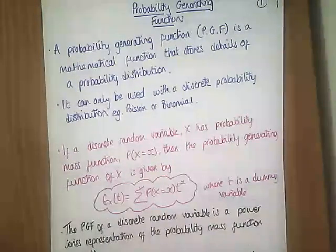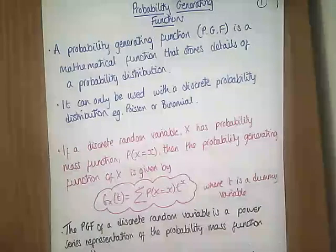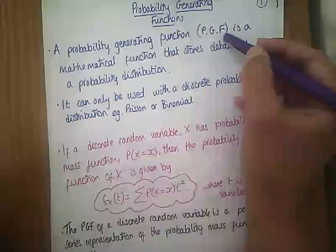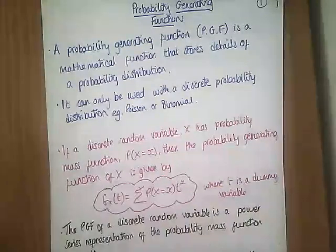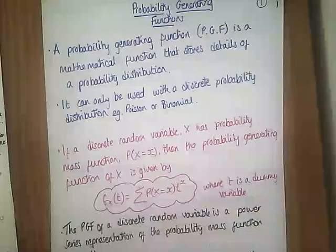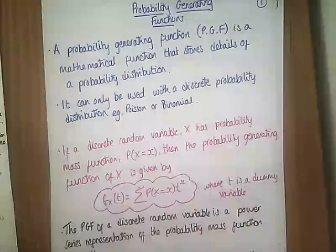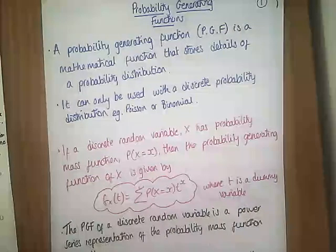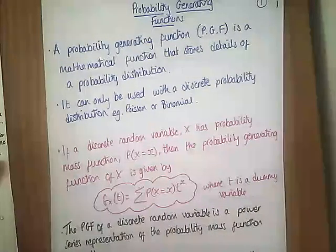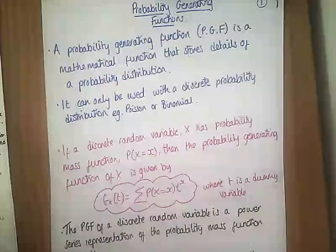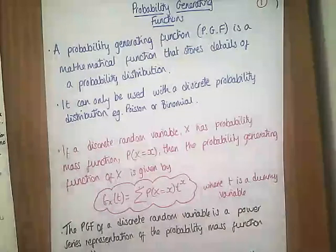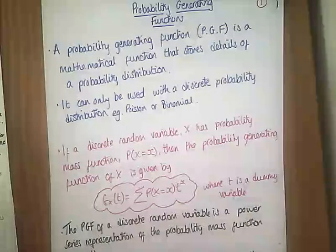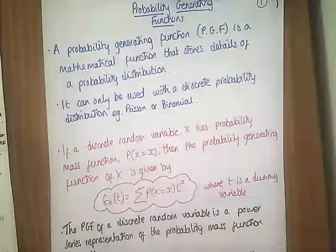It's called probability generating functions, which we abbreviate to PGFs. All a probability generating function is, is a mathematical function that stores details of a probability distribution. It can only be used with discrete probabilities — a discrete probability distribution that takes non-negative integer values. So for example, the binomial distribution or the Poisson distribution would be suitable distributions to use with PGFs.